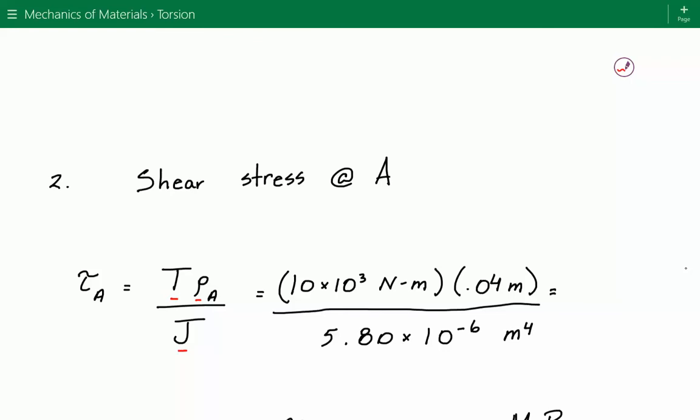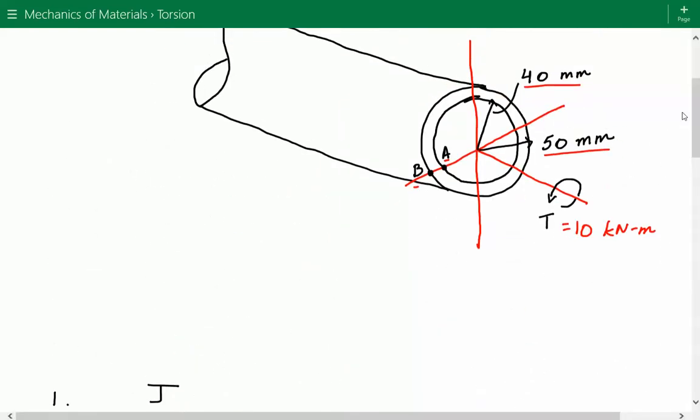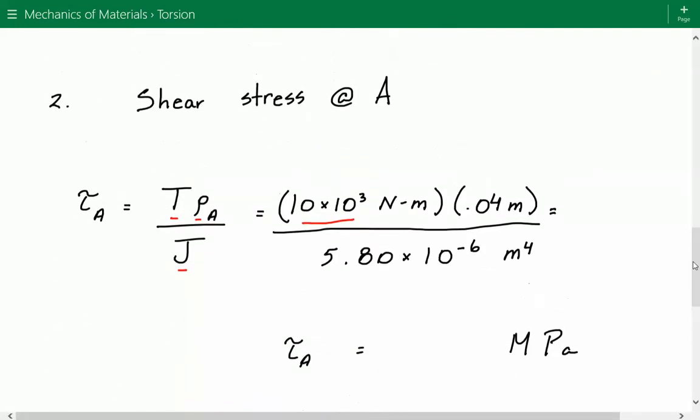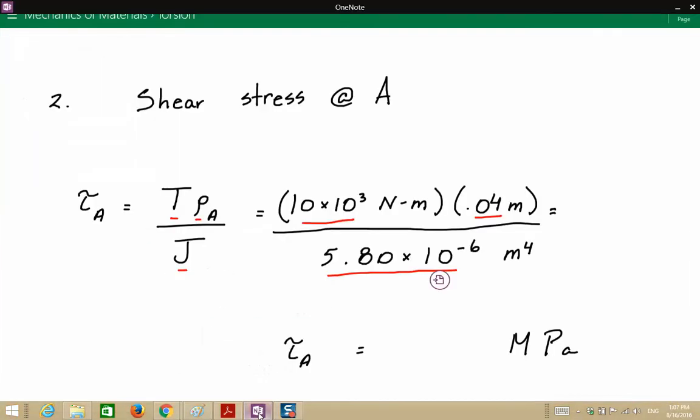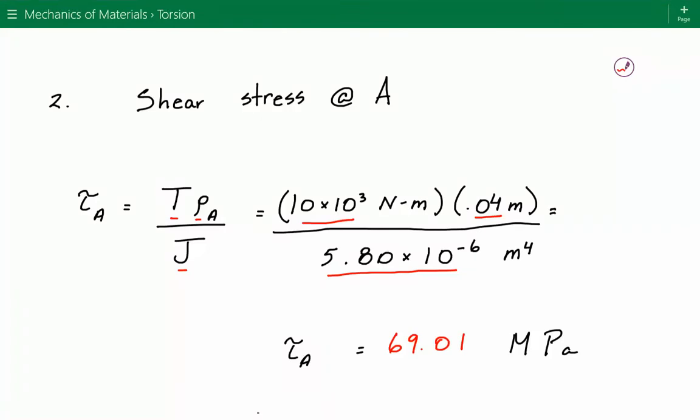Our torque is 10 kilonewton meters, converted to newton meters, so it's 10 times 10³ N·m. The radial distance from the center of the cross-section to location A is 40 millimeters. Location A is at the inner radius location, so it's 0.04 meters, and then divide by J which we just calculated, 5.8 times 10⁻⁶ m⁴. The shear stress at location A is about 69.01 megapascals.